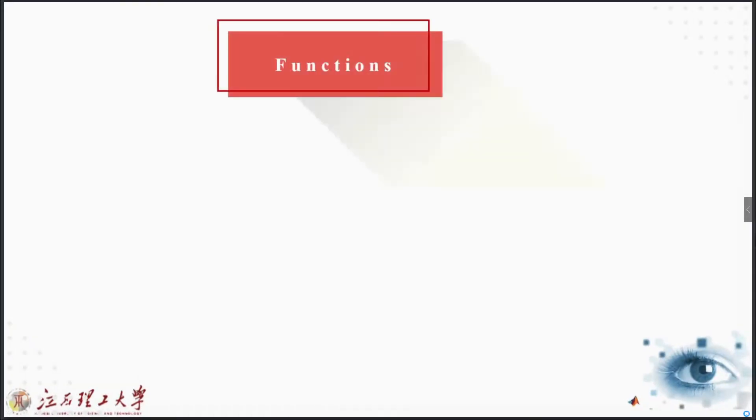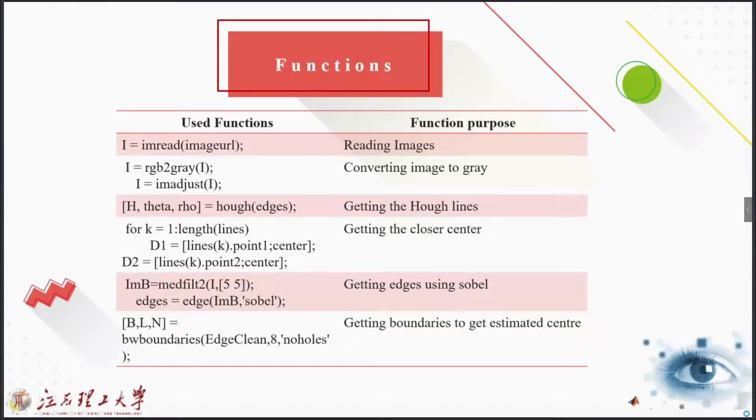These are the functions I have used in this project and in my program for some specific purpose: for reading the image, converting the image to gray, getting the Hough lines, and then getting closer to the center. Getting closer to the center, because this is an analog clock and we're going to calculate the angle of the watch hand, so we have to figure out the center first. If the center is not checked or mentioned or gotten rightly, then the angle of the hands might be wrong and we can get wrong results from the program.